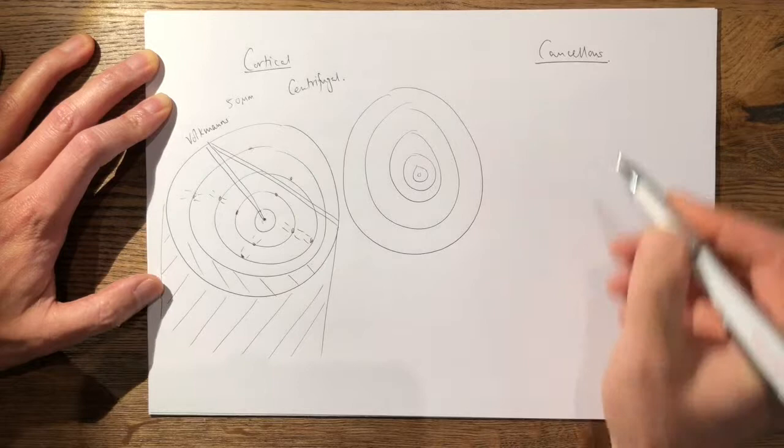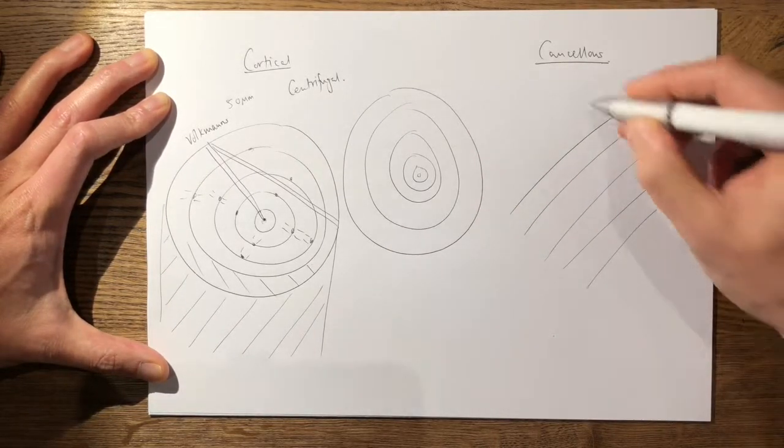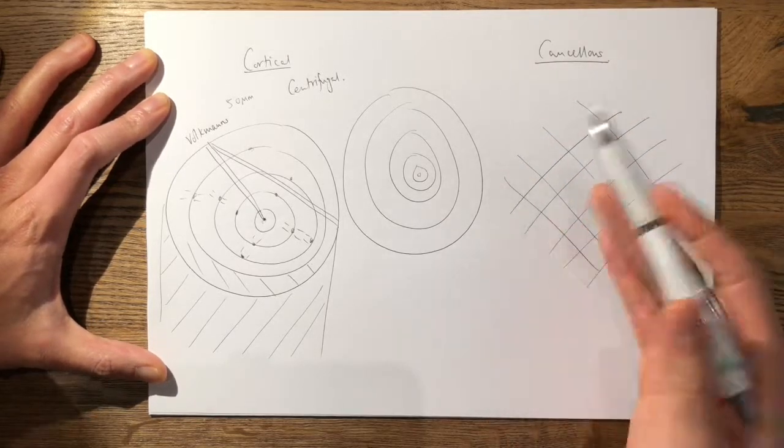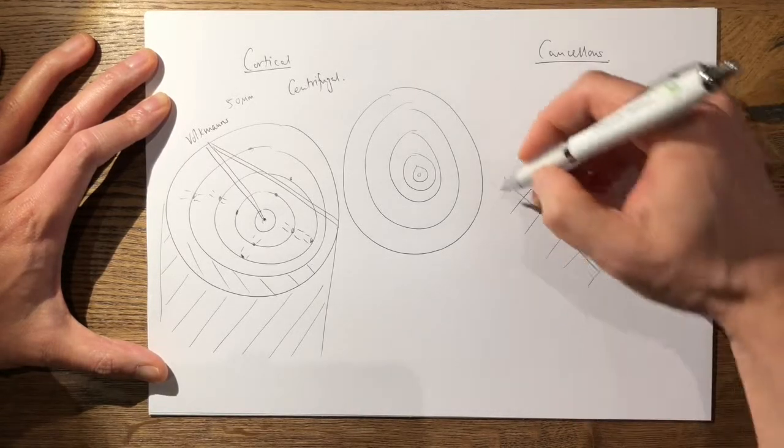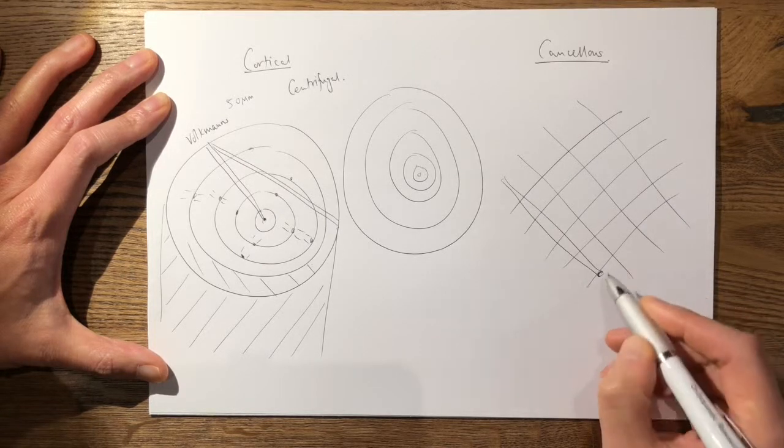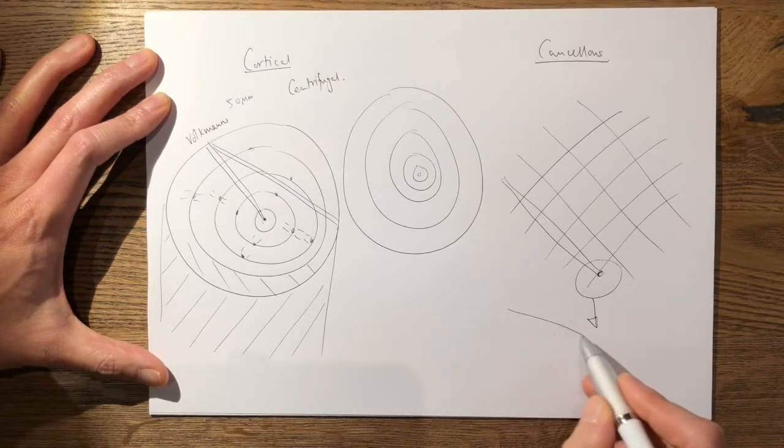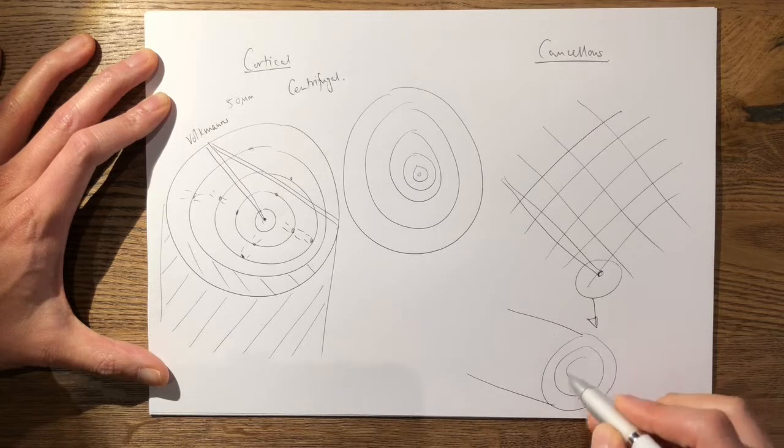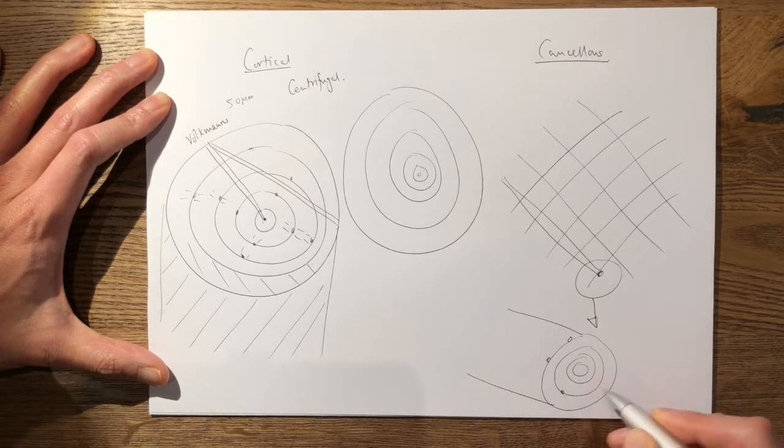If you then move on to cancellous bone, macroscopically it is much more porous—almost arranged like a honeycomb, a 3D lattice. But if you look into each part of this honeycomb and go microscopically, it still is arranged through concentric rings of lamellae with trapped osteocytes like cortical bone.